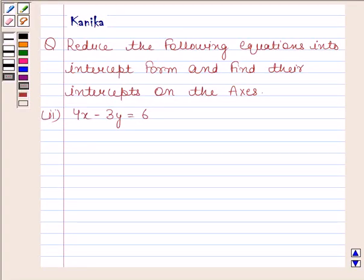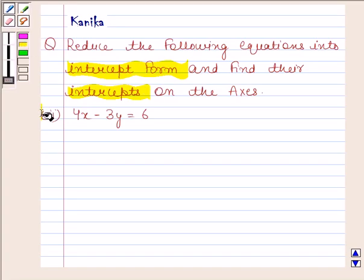Hi and welcome to the session. Let us discuss the following question. The question says reduce the following equations into intercept form and find their intercepts on the axes. The equation is 4x minus 3y equals 6.